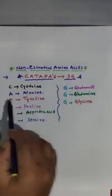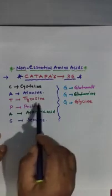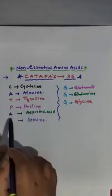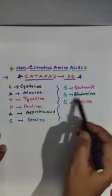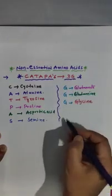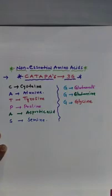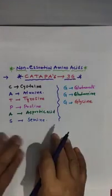C stands for Cysteine, A for Alanine, T for Tyrosine, P for Proline, A for Aspartic Acid, S for Serine. 3G: Glutamate, Glutamine, Glycine. I think it is very useful for you to remember.